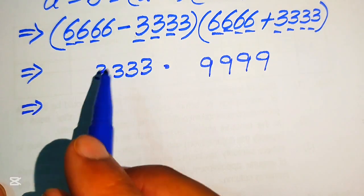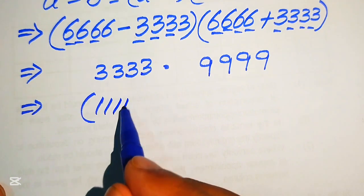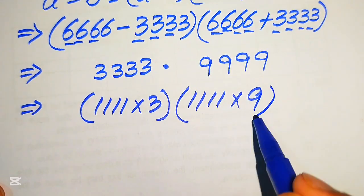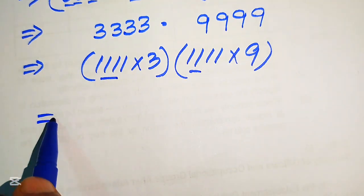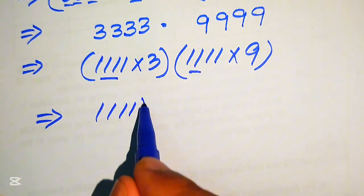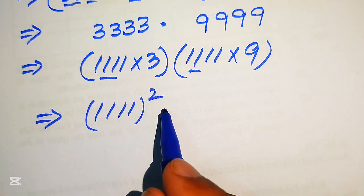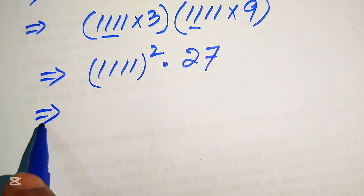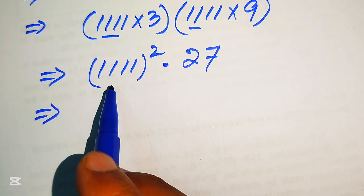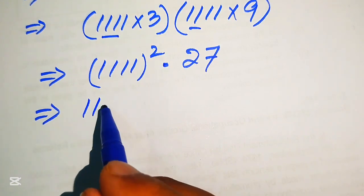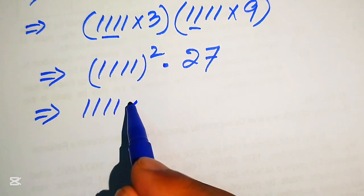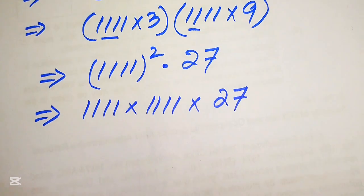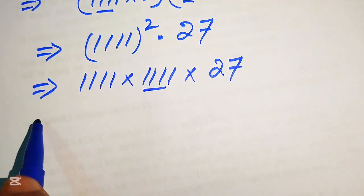We rewrite 3333 as 1111 multiplied by 3, and 9999 as 1111 multiplied by 9. So when we multiply these terms together we get 1111 whole square multiplied by 3 times 9, which equals 1111 squared times 27. In the next step we need to expand this value, meaning we multiply 1111 by 1111 by 27.